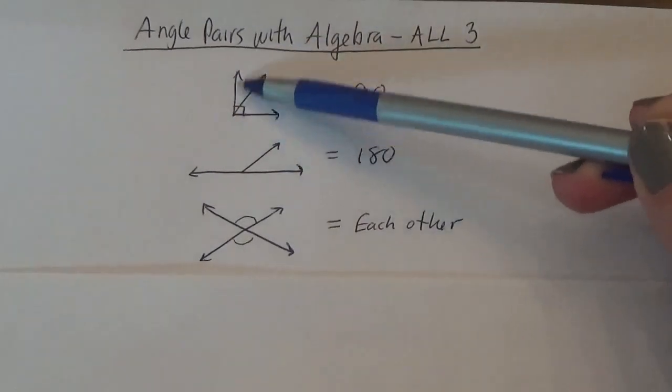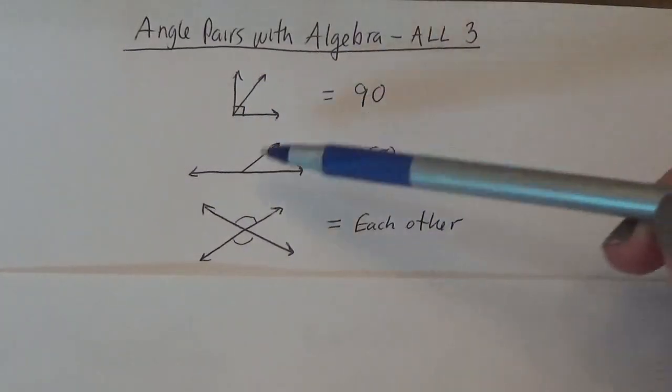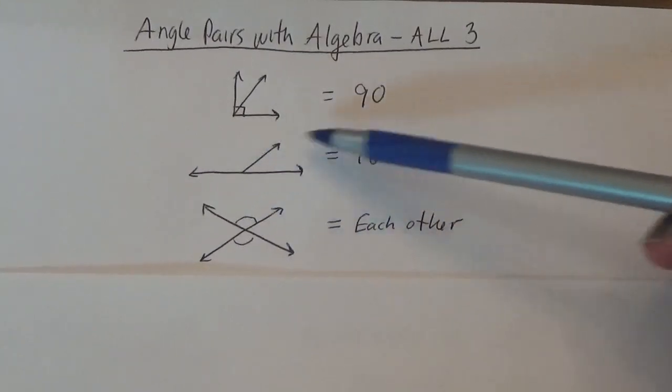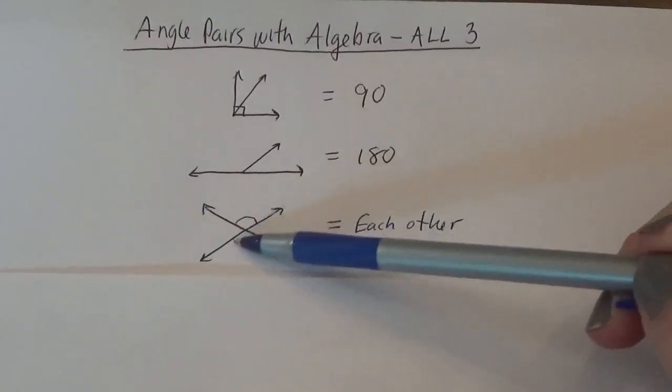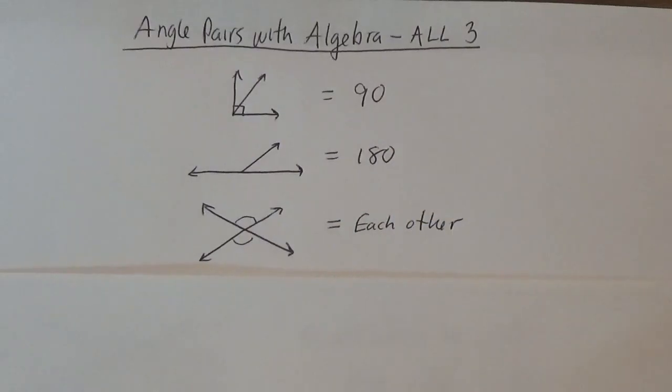If it looks like this, you know it's complementary. The angles should add up to 90. If it's a straight line and two angles next to each other, they should equal 180. If they give you intersecting lines like this and they give you angles opposite each other, then they're going to equal each other and that's vertical.